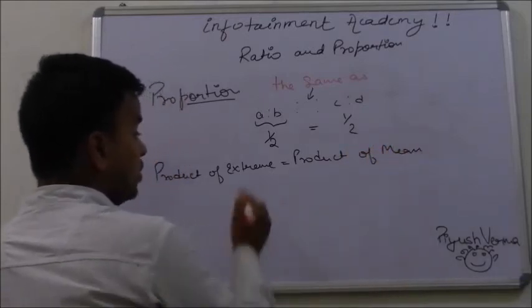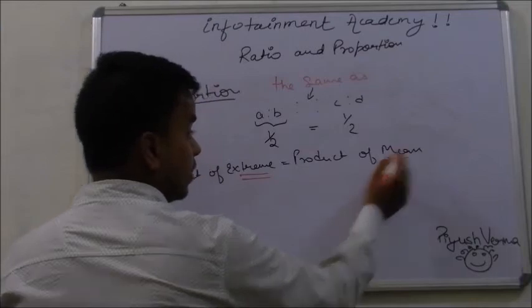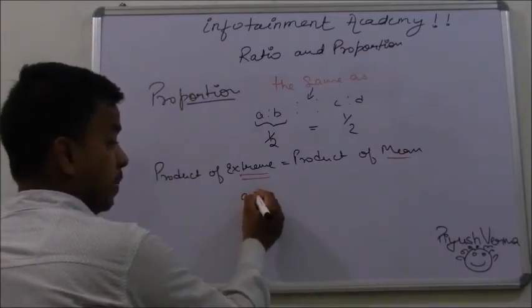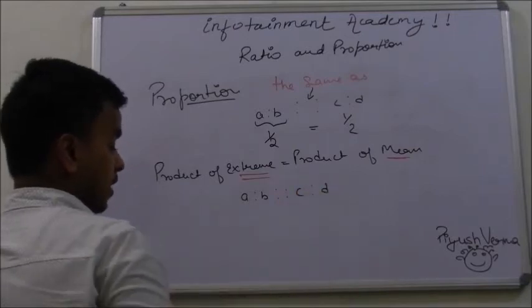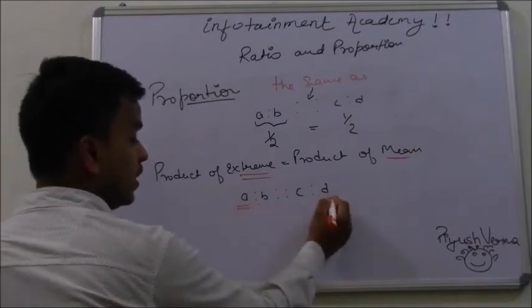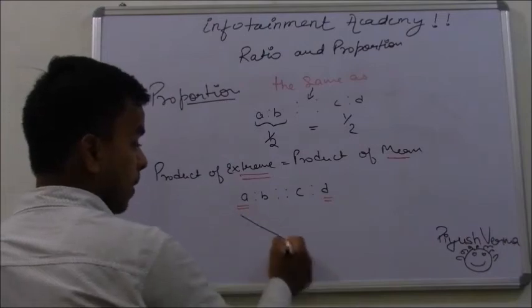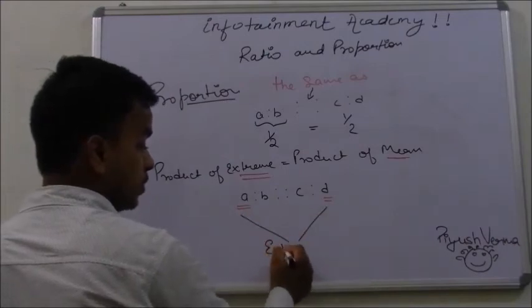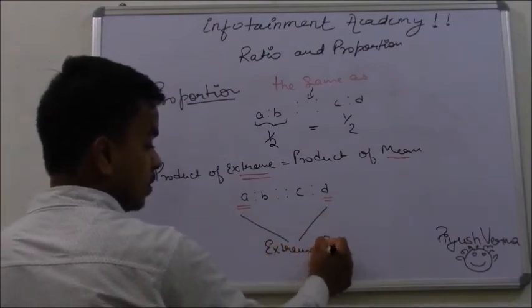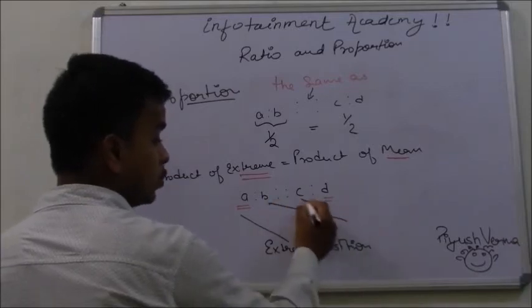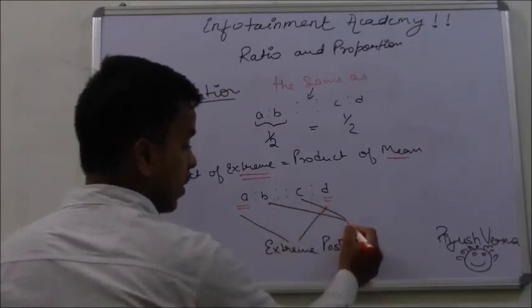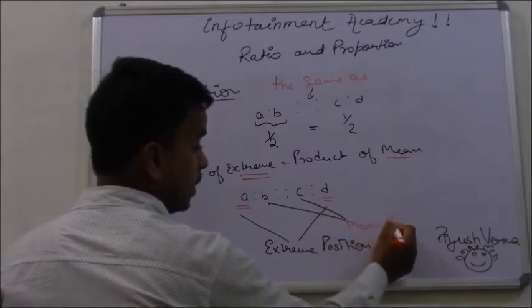Now, what are these terms, extreme and mean? To understand them, let's take an example. A is to B is in proportion with C is to D. Then the positions A and D are known as extreme position, and the positions B and C are known as mean position.